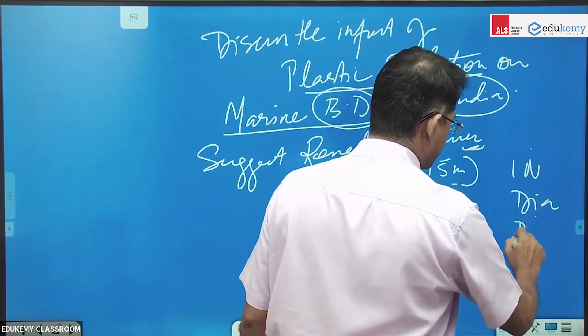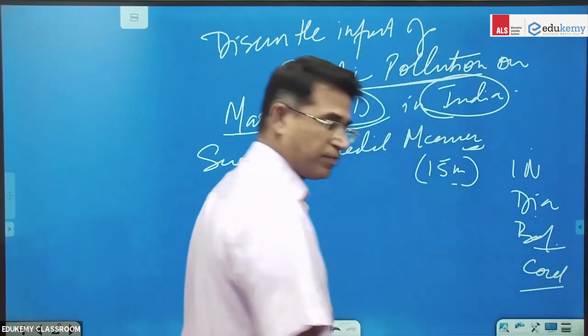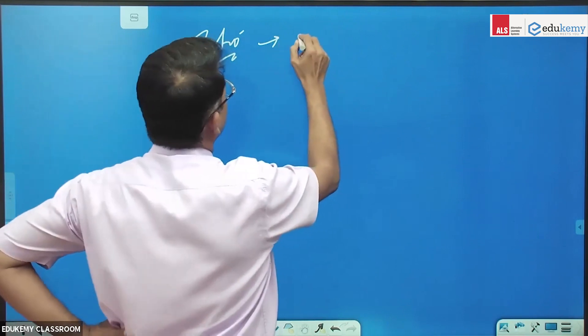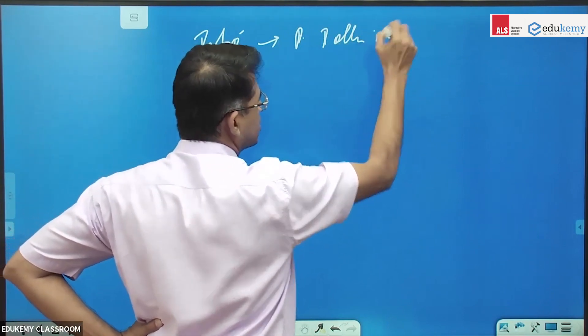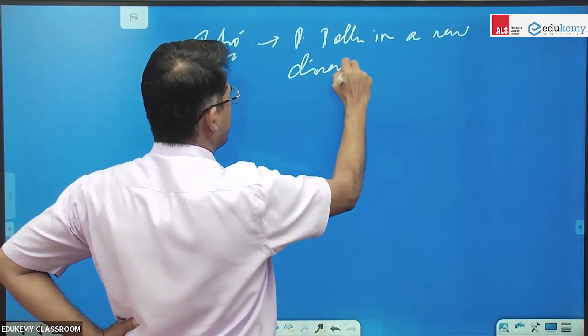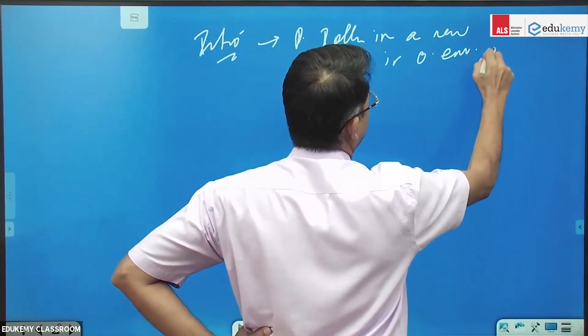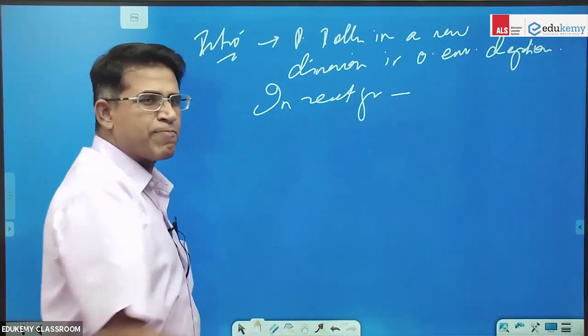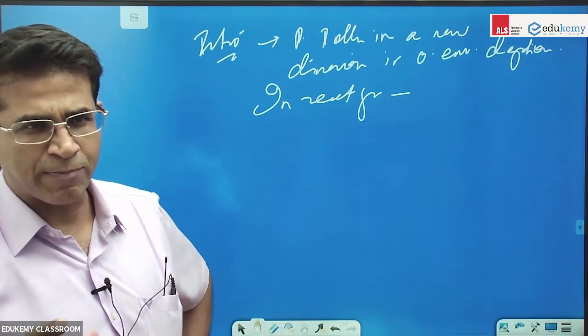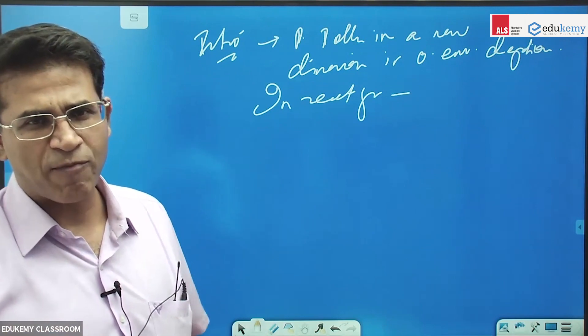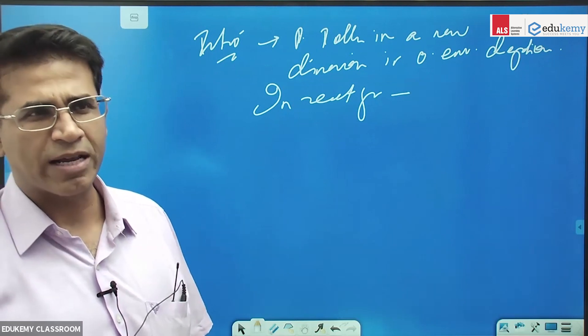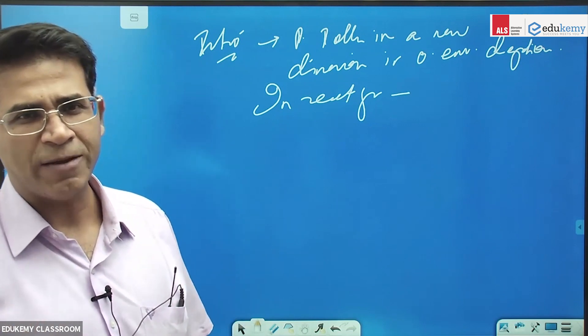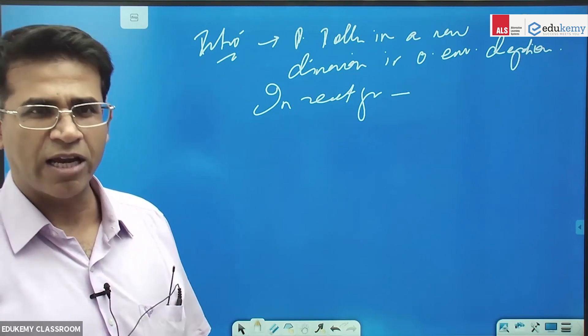So think of the same format - you have introduction, you'll have a diagram, you'll have some body-based discussions and conclusions. So introduction. In general I lay down that plastic pollution is a new dimension in ocean environmental degradation. In recent years, can you give me some specifics about plastic pollution? Some terms, some specifics - what type of plastics, what type of size?